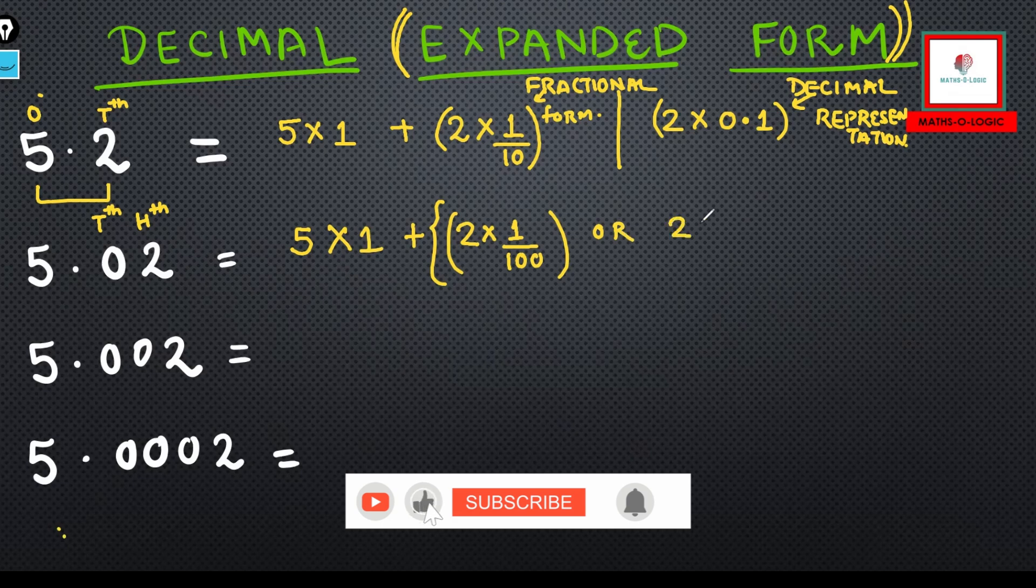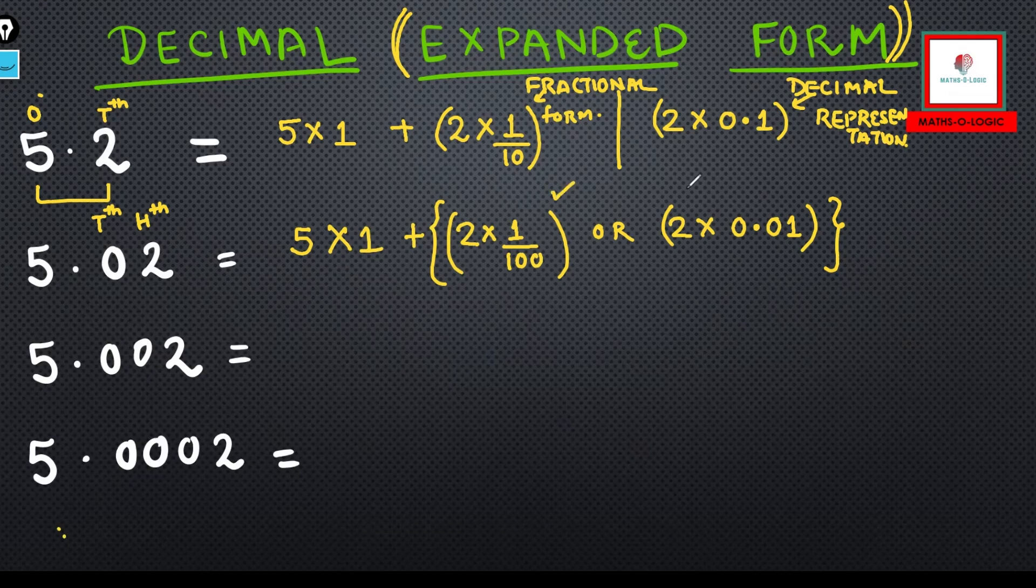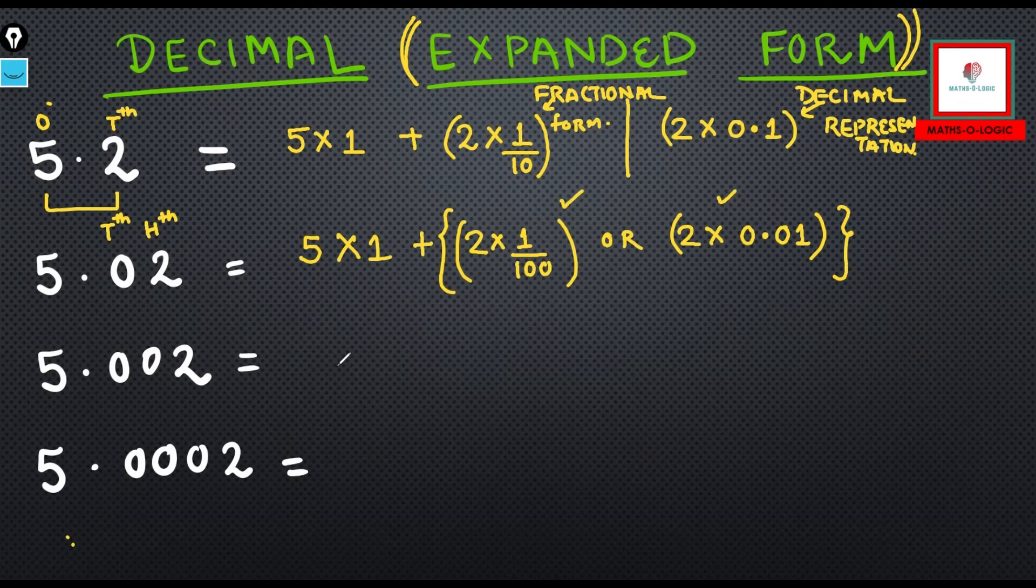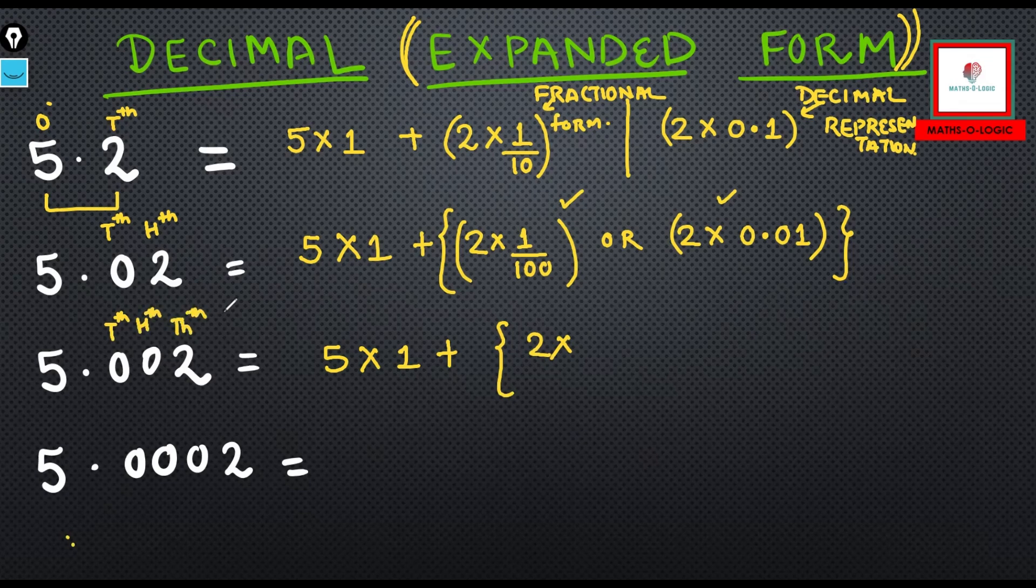Or you can write in the decimal form also. You can choose either of the two. Now this becomes 5×1 plus 2× - now this becomes ten, hundred, and this is thousand. Now this is 1/1000, or you can pick 2×0.001. Either of the two.